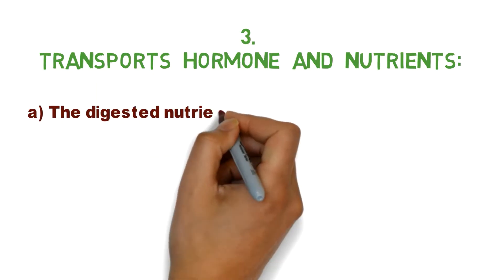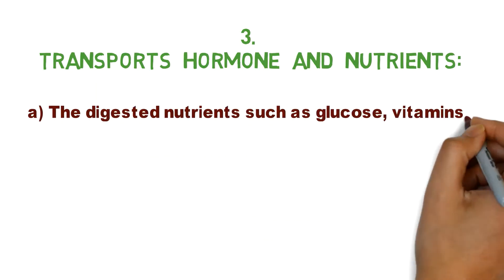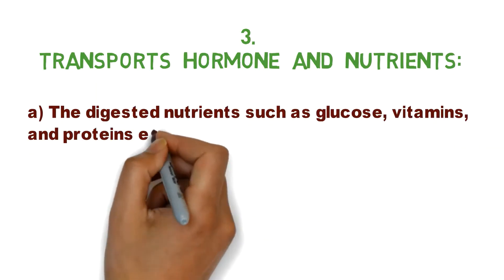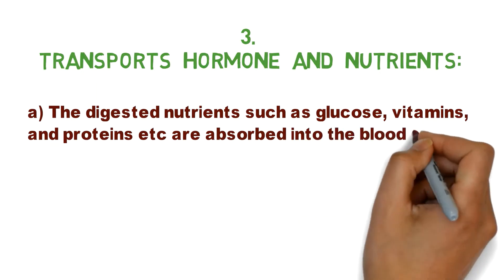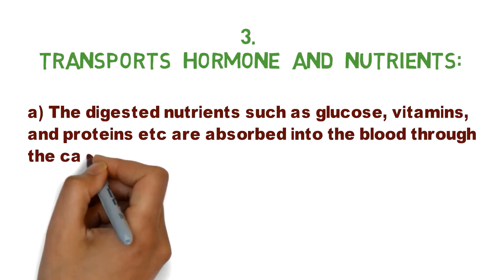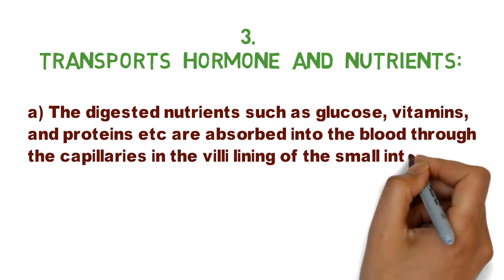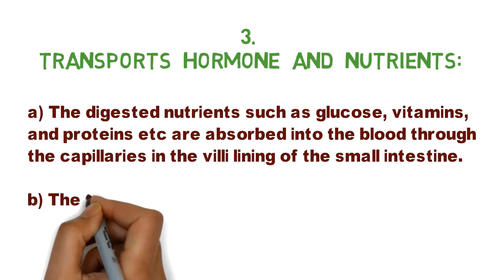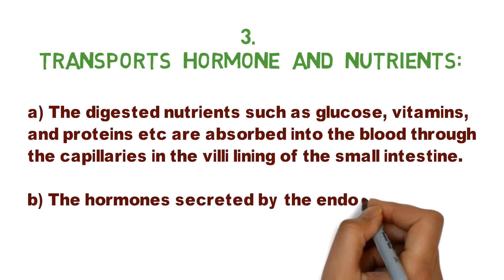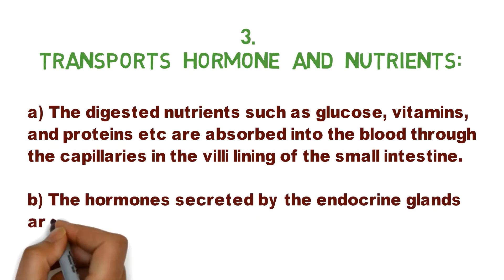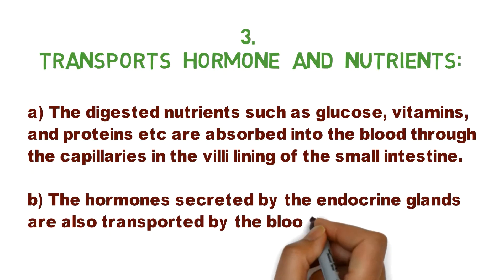Third, blood transports hormones and nutrients. The digested nutrients such as glucose, vitamins, and proteins are absorbed into the blood through the capillaries in the villi lining of the small intestine. The hormones secreted by the endocrine glands are also transported by the blood to the different organs and tissues.